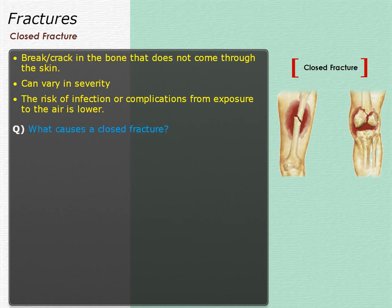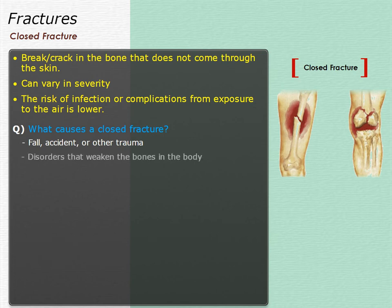What causes a closed fracture? A closed fracture is usually caused by an injury to the bone as the result of a fall, accident, or other trauma. Disorders that weaken the bones in the body, such as osteoporosis and cancer, put some people at higher risk for injury.